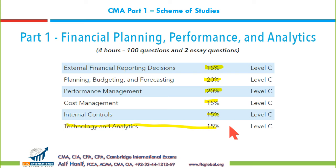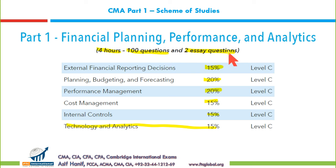The paper is four hours long and consists of two parts. The first part requires 100 MCQs and the next part requires two essay type questions. Most of you are probably not aware that the level of testing in the CMA exam is up to level C.